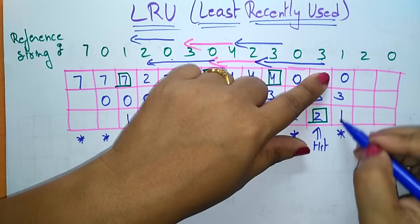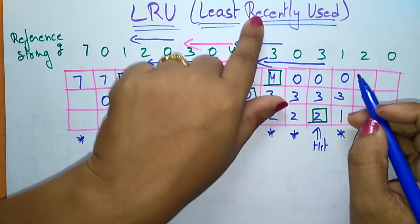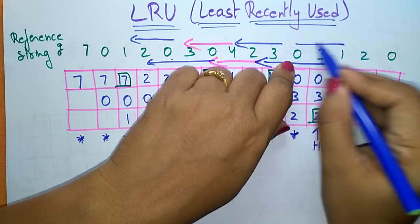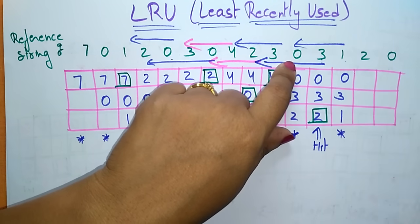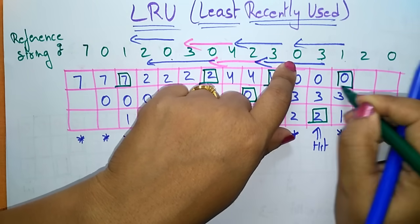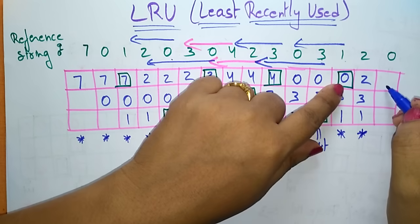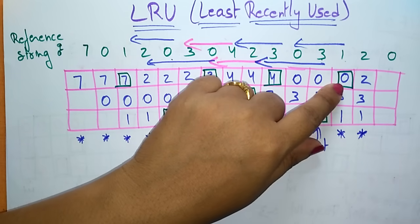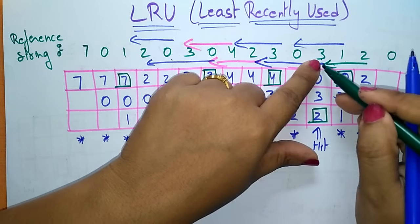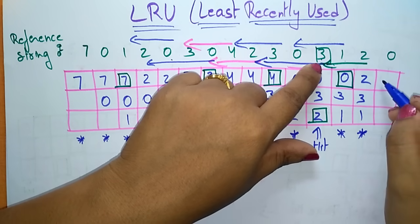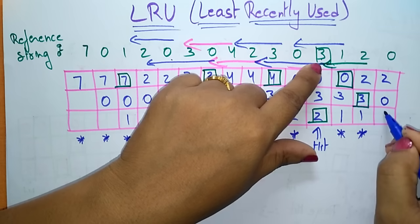Next, the CPU is demanding page 2 — 2 is not present, so I bring it from the disk. Frames are full, so check least recently used among 1, 3, 0: 1 is most recently used, then 3, and 0 is the least recently used. Replace 0 with 2, giving frames: 2, 3, 1. This is a page fault. Now place 0 — check least recently used among 2, 3, 1: 2 is most recently used, 1 is next, and 3 is least recently used. Replace 3 with 0, giving frames: 0, 2, 1. This is also a page fault.